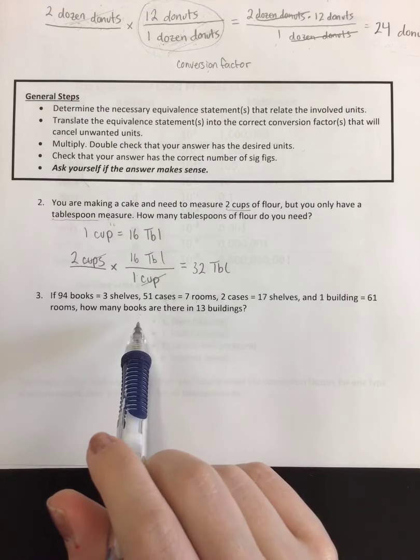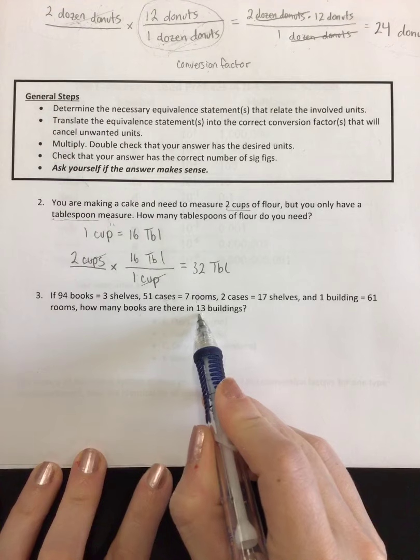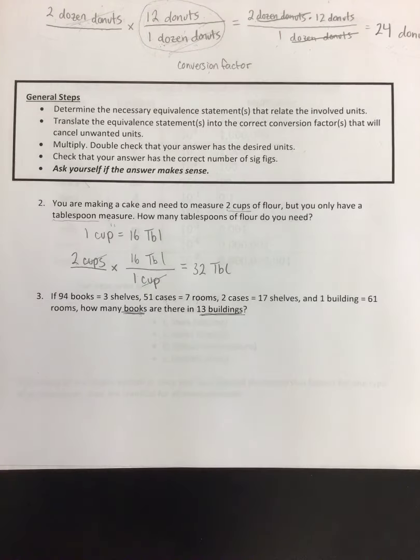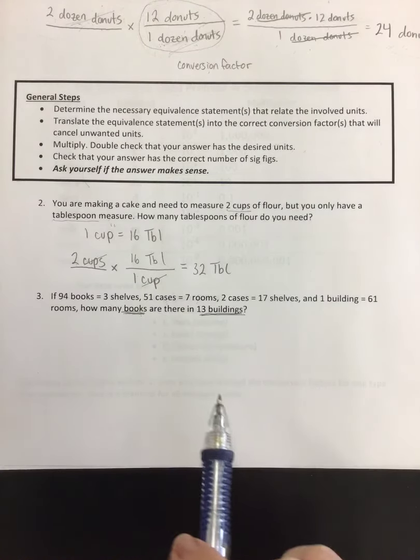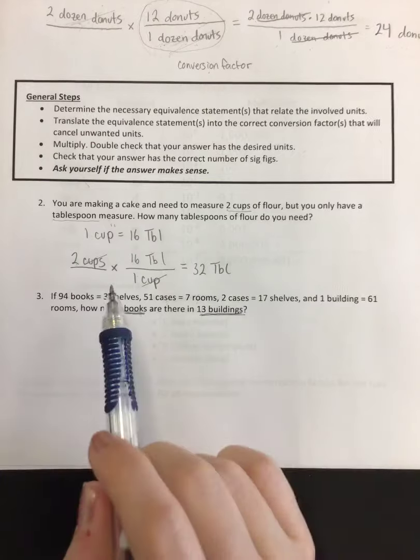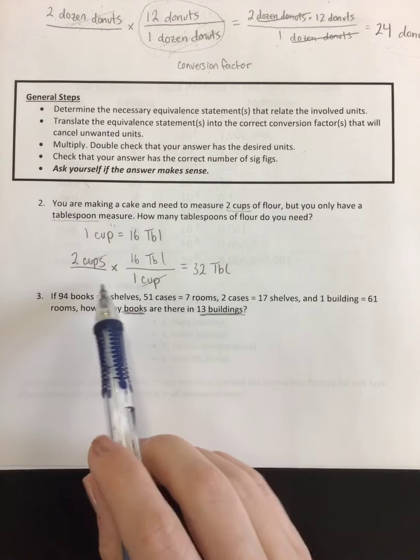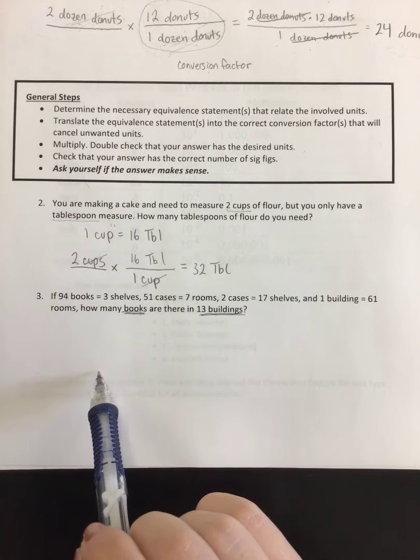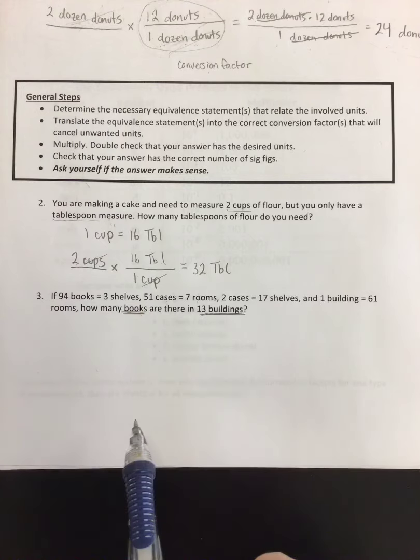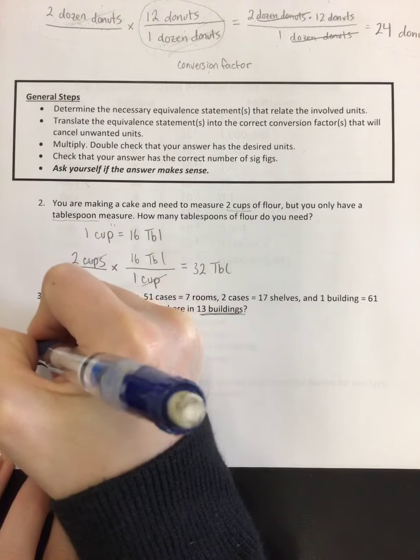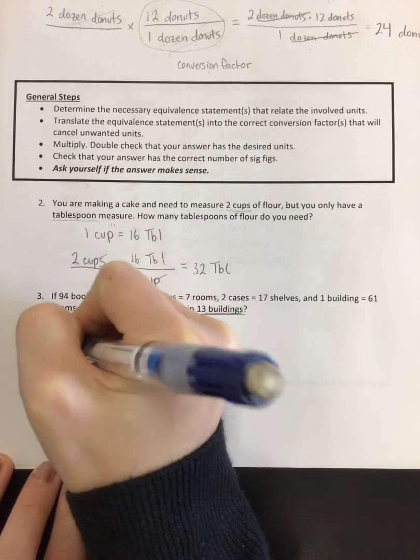So where should I start? What do I need to do? Well, I need to start with buildings because that's the only thing that I'm given. And I need to work backwards to books. Is there an equivalent statement given to me up here that directly relates buildings and books? Well, that's books and shelves. That's buildings and rooms. But no, there doesn't seem to be anything that relates books and buildings. So we're stuck.